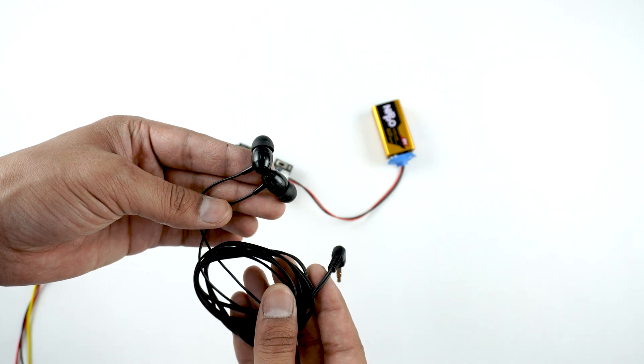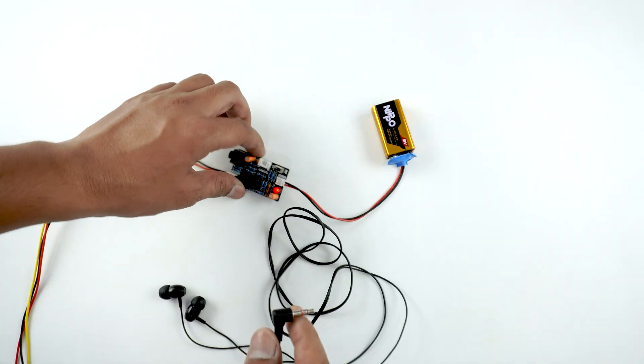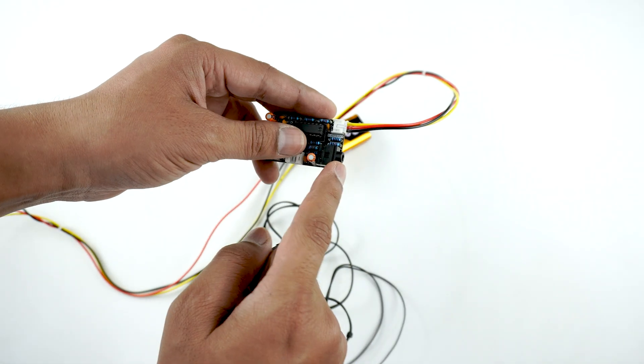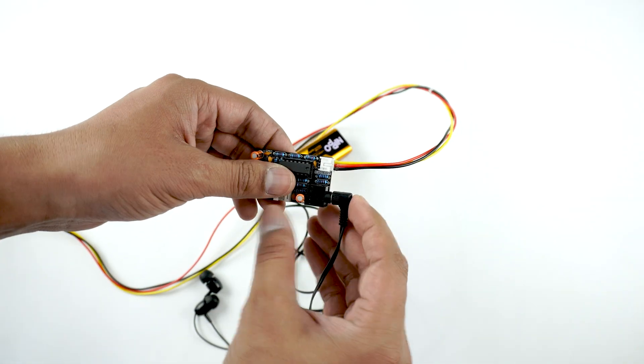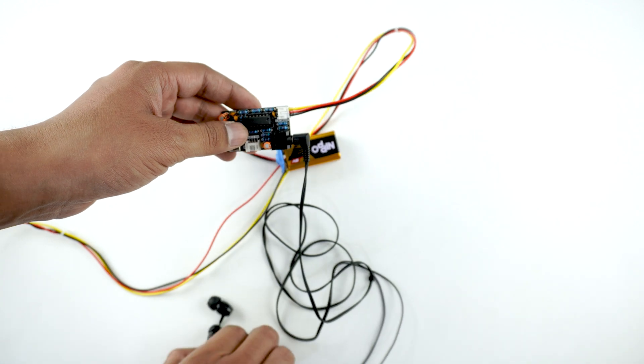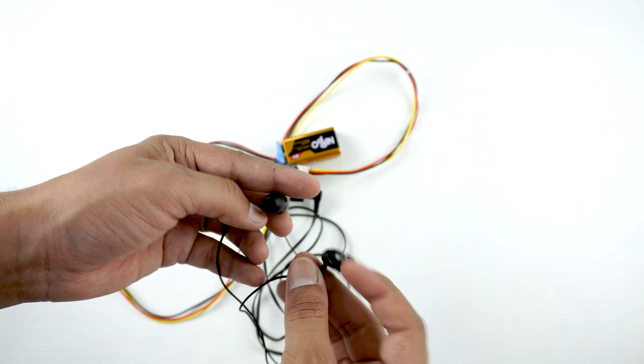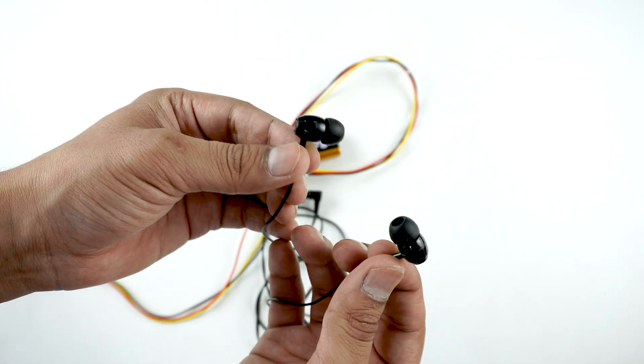You also have an option to listen to the muscle signals on earphones or headphones. So connect the earphones on this 3.5mm jack of BioAmp version 1.5 and plug them in your ears. Now flex again and listen to the muscle signals.